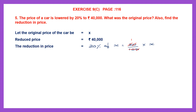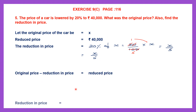2 ones are 2 and 2 fives are 10. Now multiply the numerators. In the numerator I have 1 and x, which is x, and in the denominator I have 5. So x by 5 is the reduction in price. Now if I subtract the reduction in price from the original price of the car, I will get the reduced price.